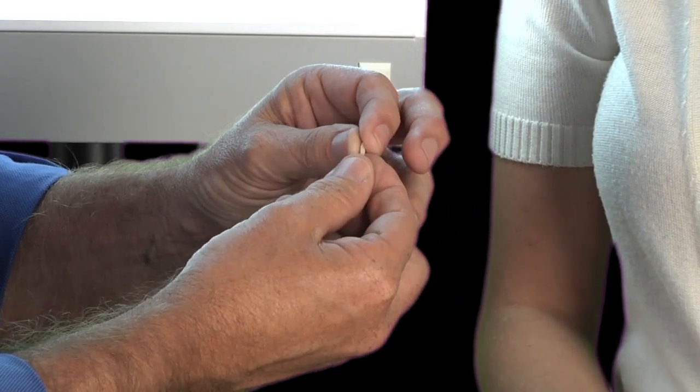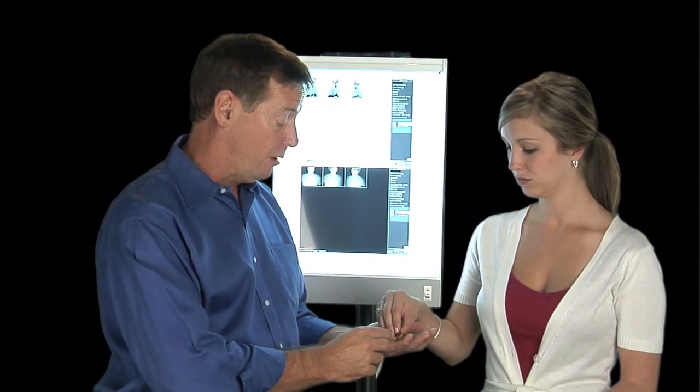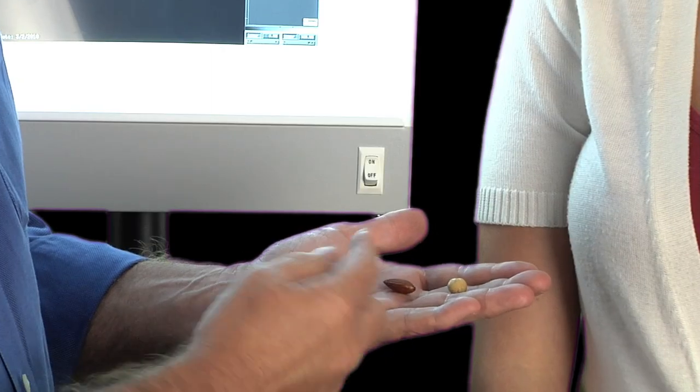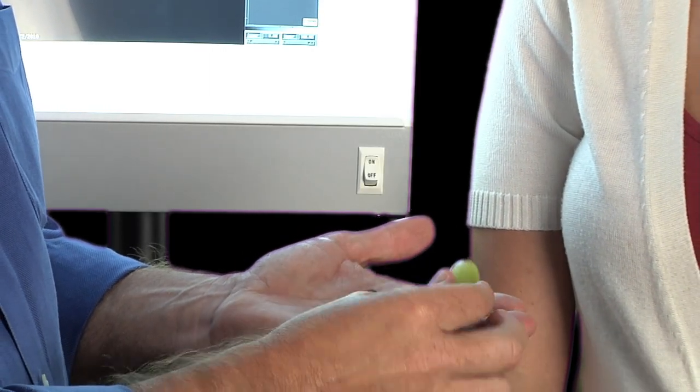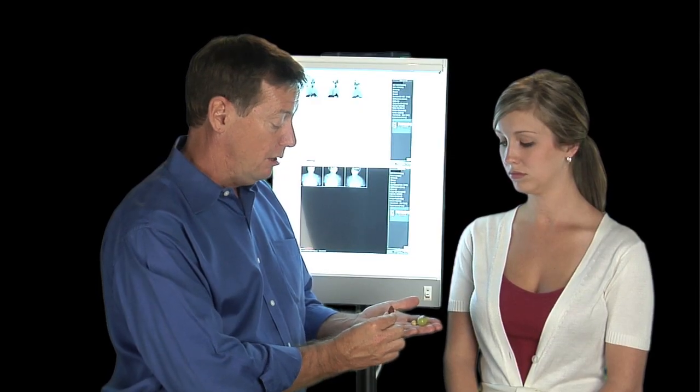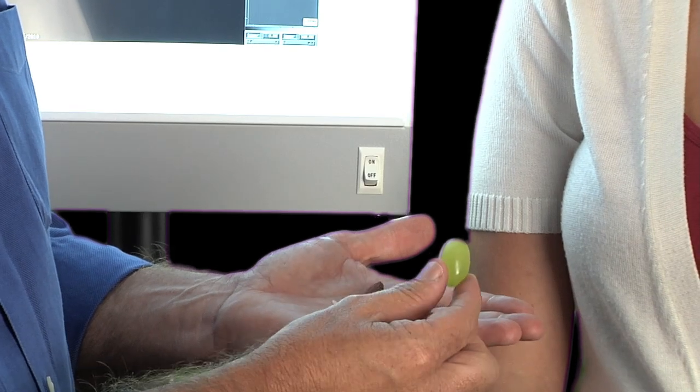Normal parathyroid glands are the size of a grain of rice. We've got four of these guys behind the thyroid. When people develop hyperparathyroidism or parathyroid disease or parathyroid tumors, their grain of rice turns into a tumor the size of a nut or a grape, maybe even an olive. Most of the parathyroid tumors we take out are the size of an almond. Some are a little bit smaller, some are a little bit bigger.